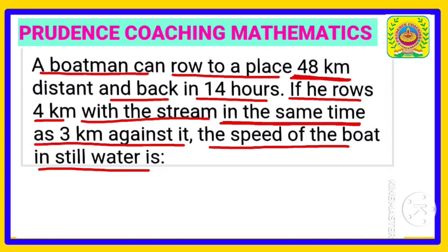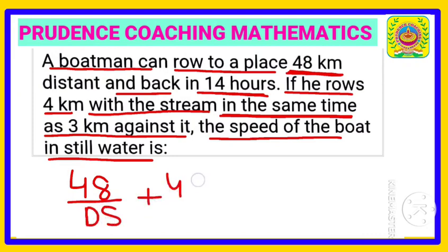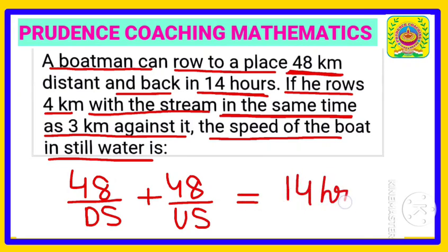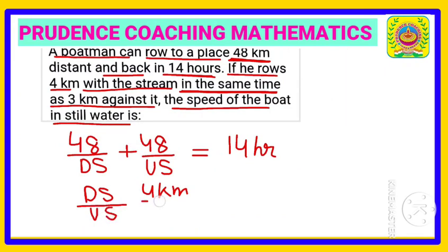The total time is 14 hours. So if we divide distance 48 by the downstream speed, plus 48 divided by the upstream speed, we get the total time of 14 hours. The next condition states that it rows 4 km downstream and 3 km upstream in the same given time, giving us the ratio of downstream to upstream distance.